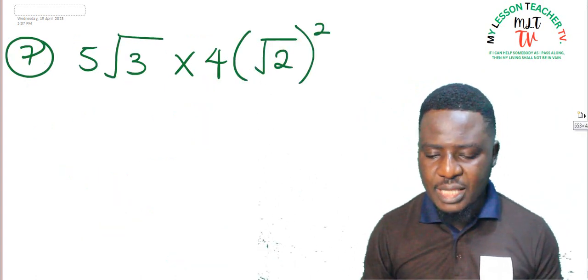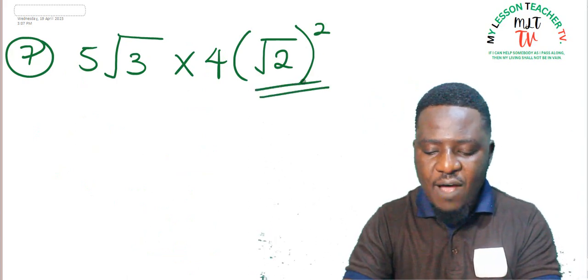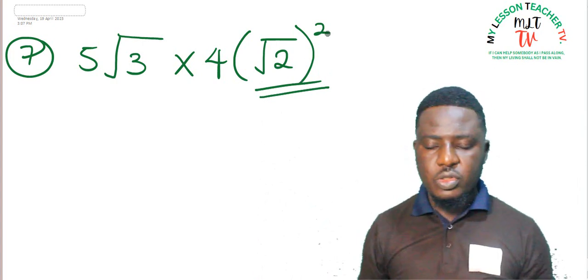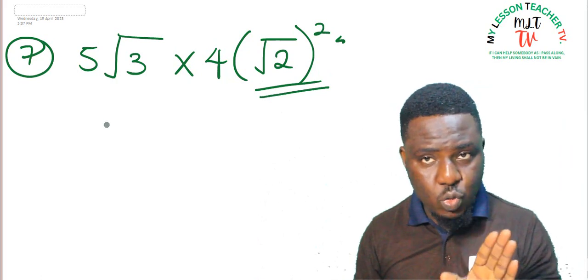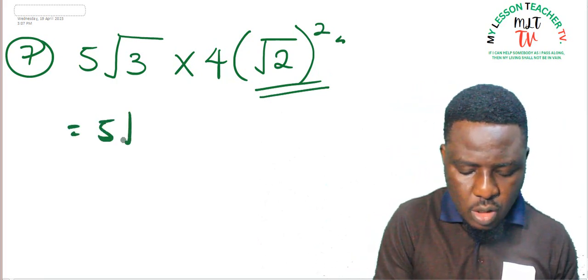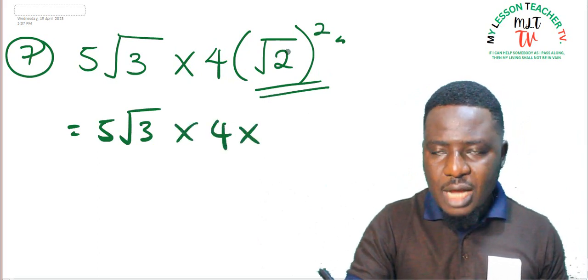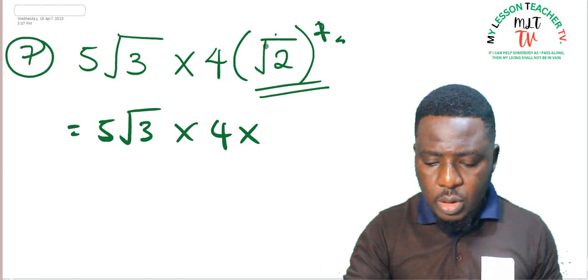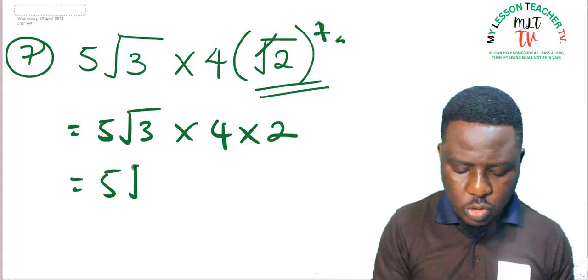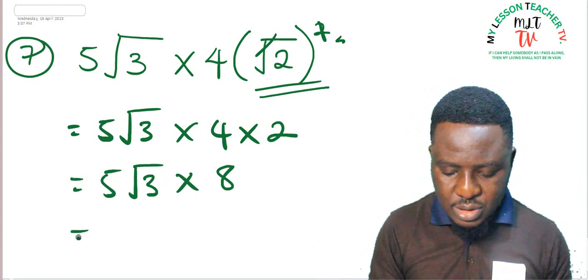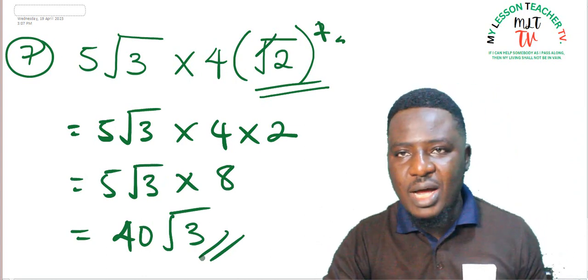Question 7: 5 root 3 times 4 (root 2) squared. Note that the square affects only root 2 inside the bracket, not the 4. The square of root 2 is 2, so this becomes 5 root 3 times 4 times 2 = 5 root 3 times 8 = 40 root 3.